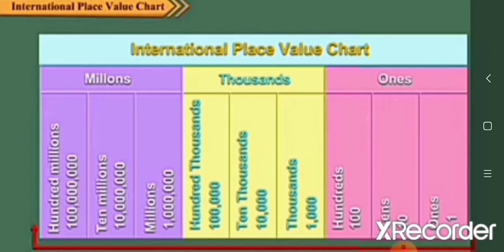Next is the international place value chart. Similar to the Indian place value chart, we start from right to left, but here we take three digits each time. The periods are: ones (ones, tens, hundreds), thousands (thousands, ten thousands, hundred thousands), millions (millions, ten millions, hundred millions), and then billions, trillions, and so on.